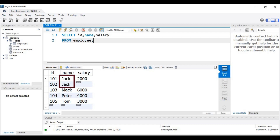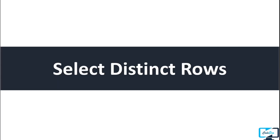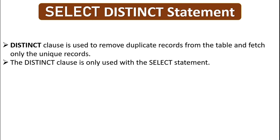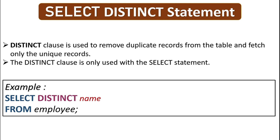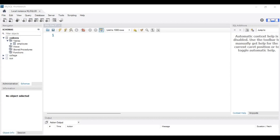In the output table we have some duplicate names. If you want only unique names from the table, you have to use the DISTINCT keyword. We use DISTINCT when we want to fetch only unique records or remove duplicate records. It is used only with the SELECT statement. To select only distinct names, our query is: SELECT DISTINCT name FROM employee — the DISTINCT keyword goes after SELECT and before the column names.